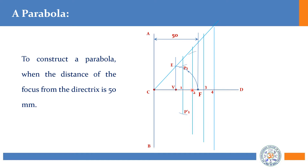Similarly, from 2 to 2-dash, measure the distance, and with F as center, cut the arc on the 2-dash line on both sides. Likewise for 3 to 3-dash — measure the distance, cut the arc from focus on both sides, and mark P3 and P3-dash. From 4 to 4-dash, measure the distance, cut the arc from focus on both sides, and mark P4 and P4-dash.